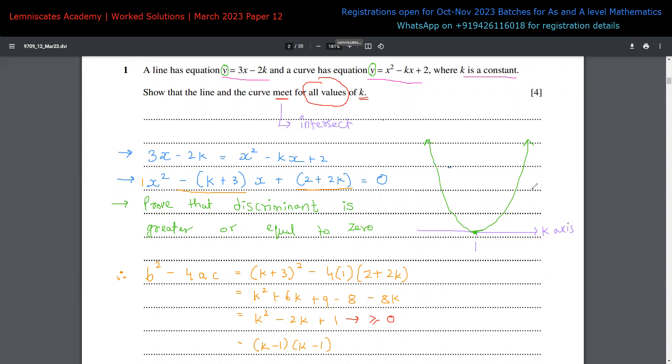And now we have proved that no matter whatever is the value of K, this curve is always greater than equal to zero. It is never going negative. It's either equal to zero at this point or for any different values of K, it's above the X axis. It's greater than X axis, basically the positive Y axis.